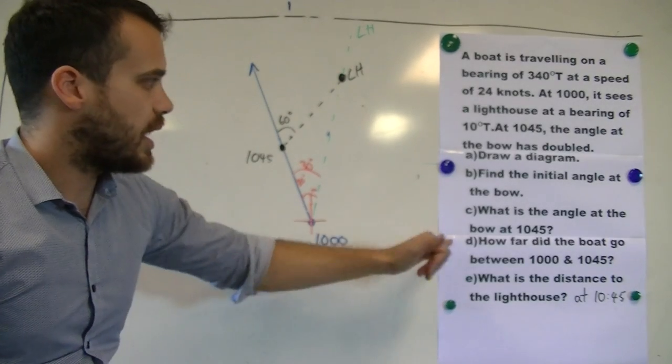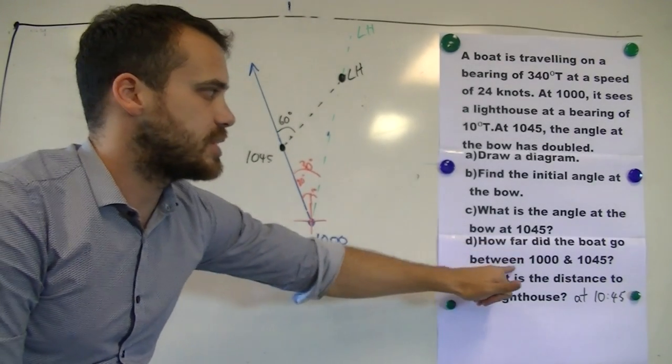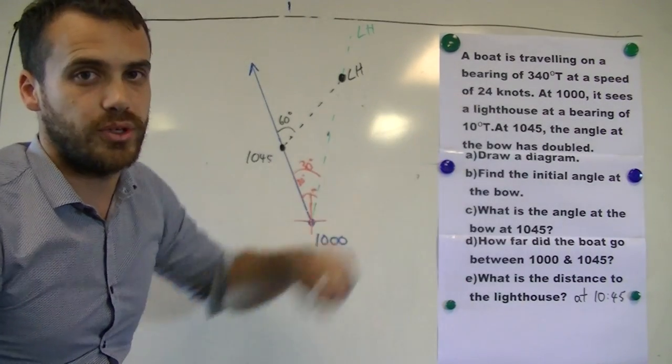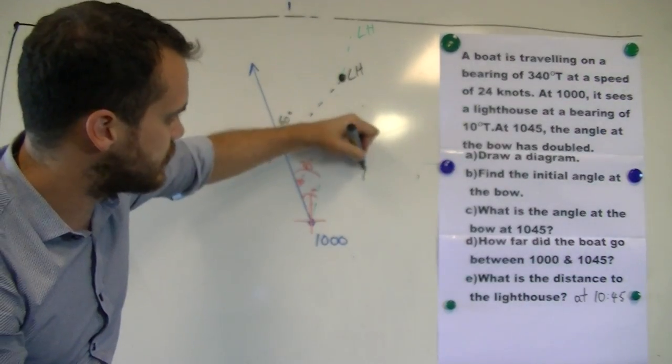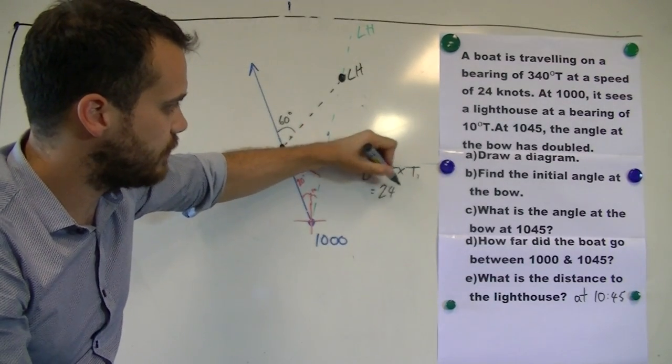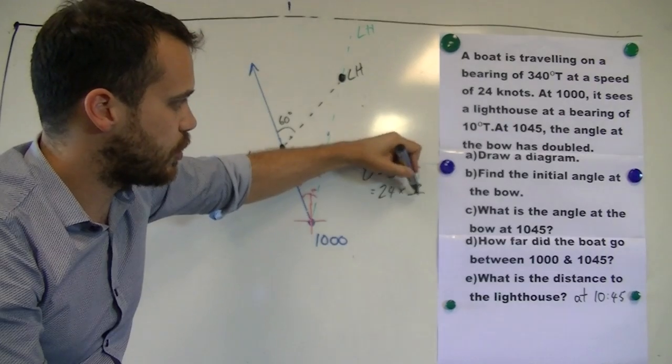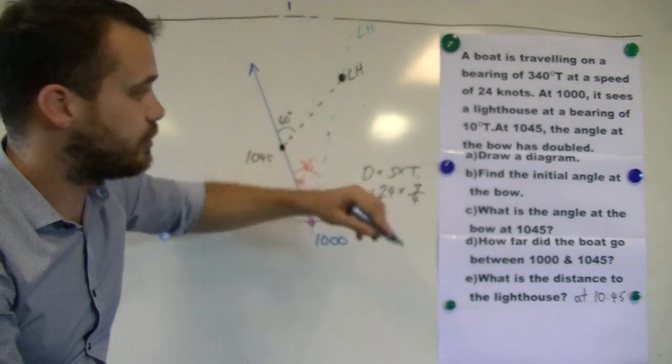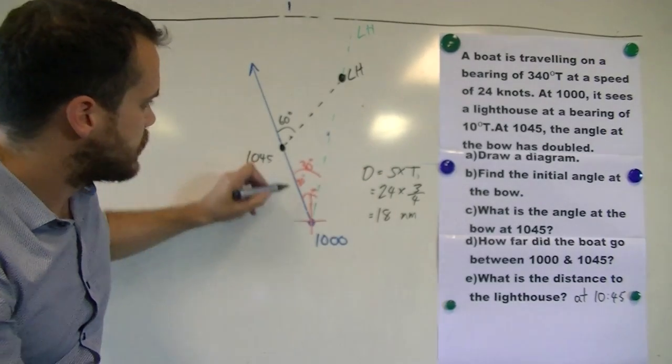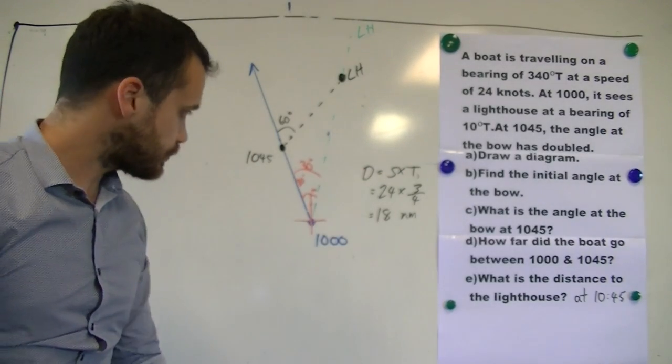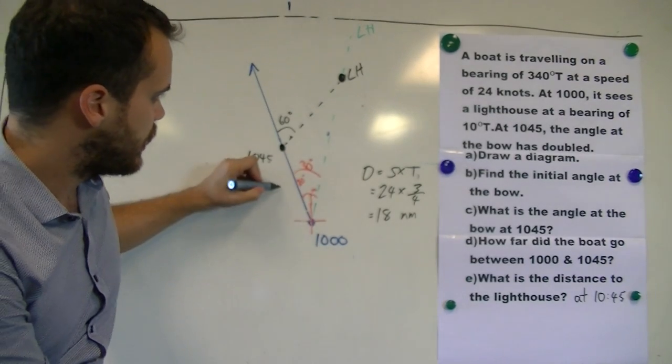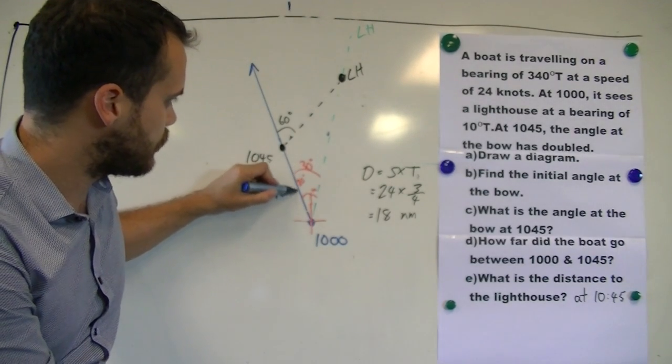Now that we've done that, how far did the boat go between 10 o'clock and 10:45? Now it was travelling at a speed of 24 knots. And remember that distance equals speed times time. 24 knots times three quarters of an hour, 45 minutes, that's going to equal 18 nautical miles. So that means that the distance along this line from 10 o'clock to 10:45 is 18 nautical miles.